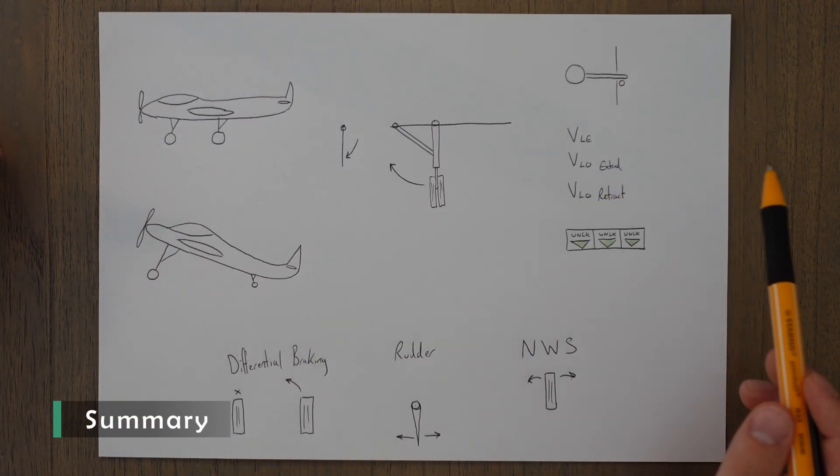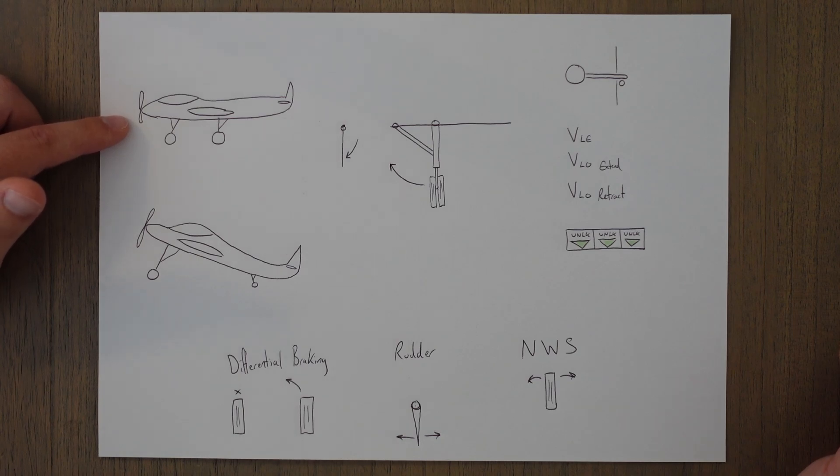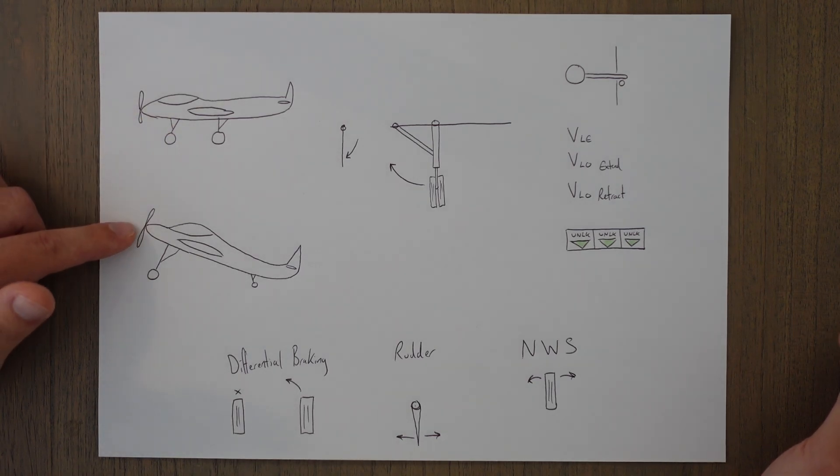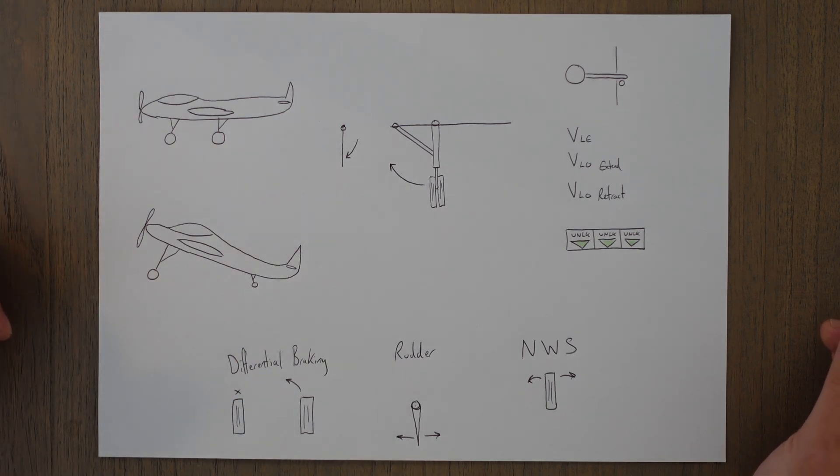To summarize then, there's two main arrangements—we've got a tricycle and a tail dragger. Tricycle is good for forward visibility and maneuvering around on the ground. Tail dragger is good for propeller clearance, therefore good for non-tarmac surfaces—you want to keep as much distance between any rocks or anything that might be on your unpaved surfaces.